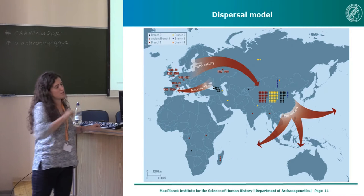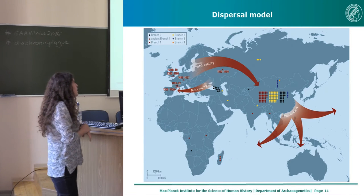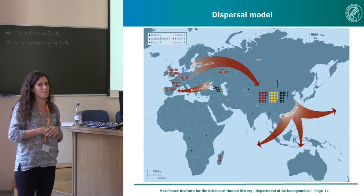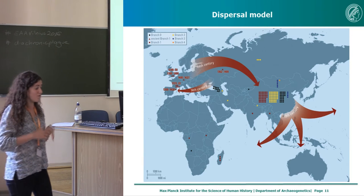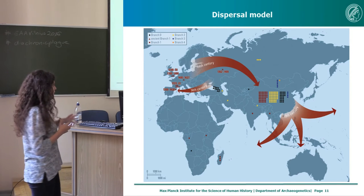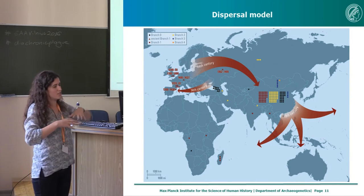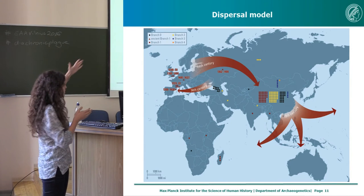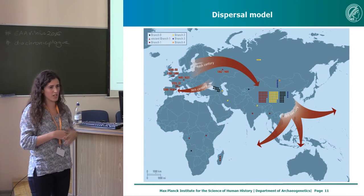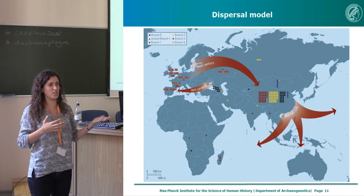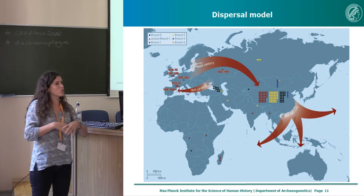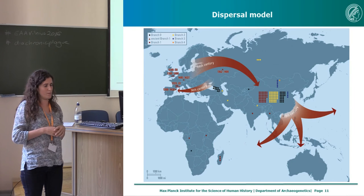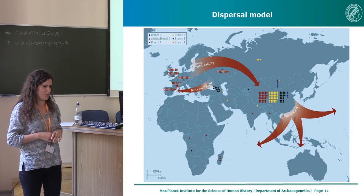To summarize: the Black Death entered Europe in the 14th century with very low diversity — perhaps just one strain of the bacterium entered and diversified in Europe to give rise to two lineages. One lineage eventually went back to China to later diversify further and be associated with the third pandemic. The other stayed behind to cause at least a large proportion of the outbreaks seen in Europe after the Black Death.